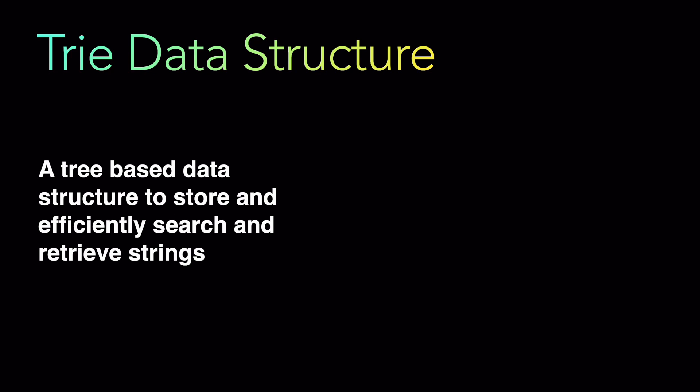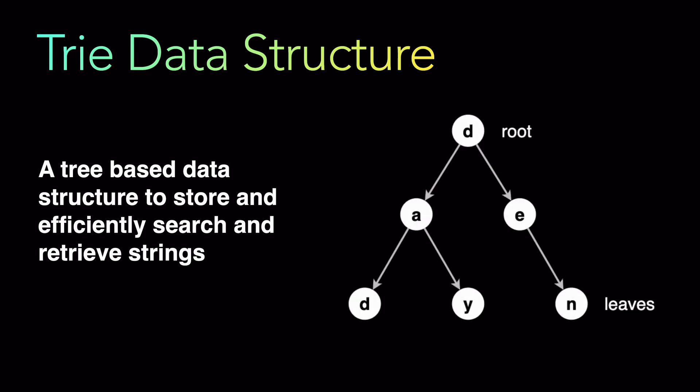So what exactly is the Trie data structure? A Trie data structure is a tree-based data structure used to store and efficiently search and retrieve strings. It is primarily based on strings. If you look at a Trie data structure, it has a root, it has leaves, it has children - everything that a tree data structure has - but what it stores are characters within each node.